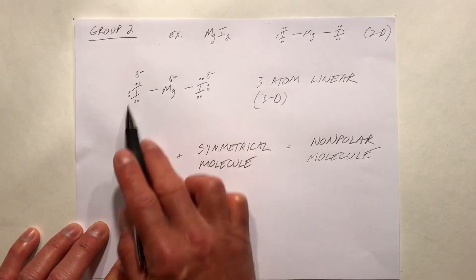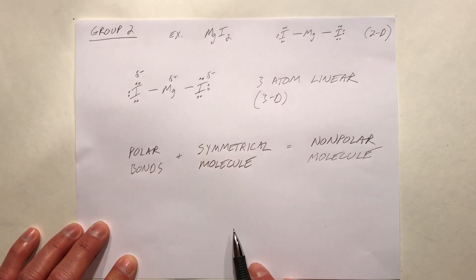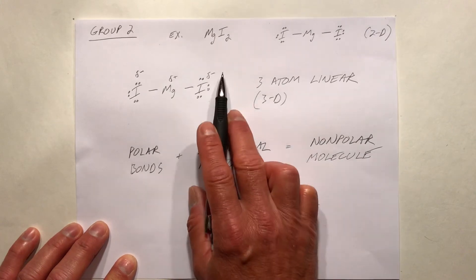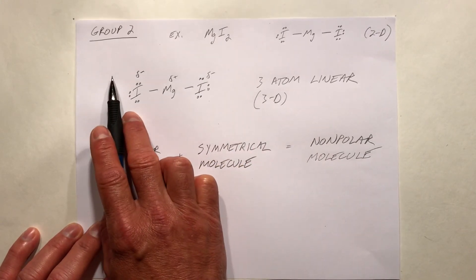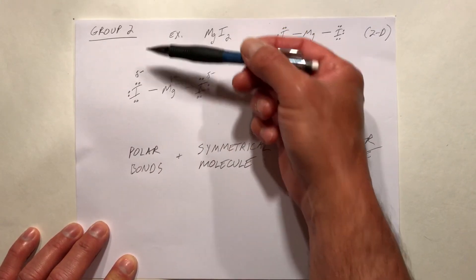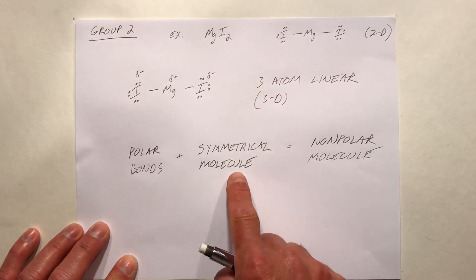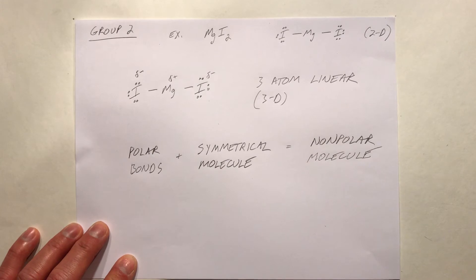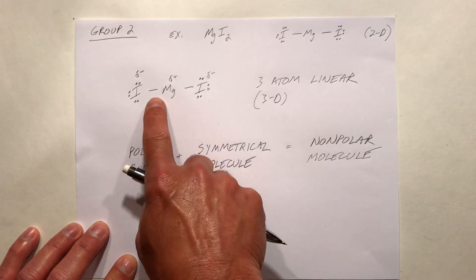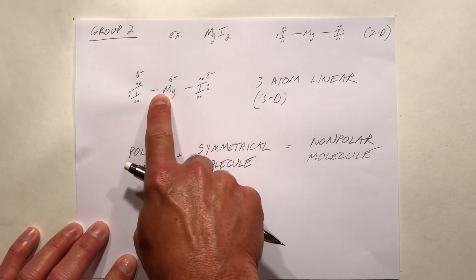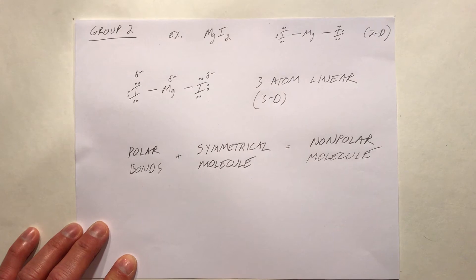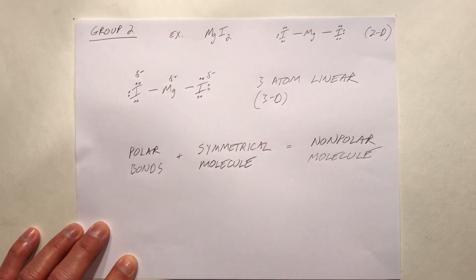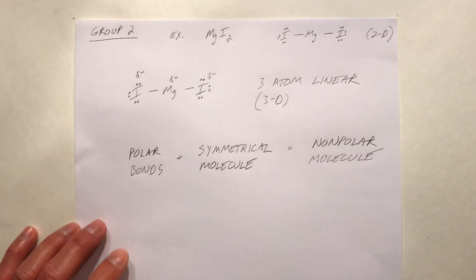But because that's a symmetrical molecule with a balanced shape, we can't say that the left is more negative than the right, or the bottom more negative than the top, or the front more negative than the back. So across the entire molecule, the uneven distribution of electrons balances out — it's a nonpolar molecule.